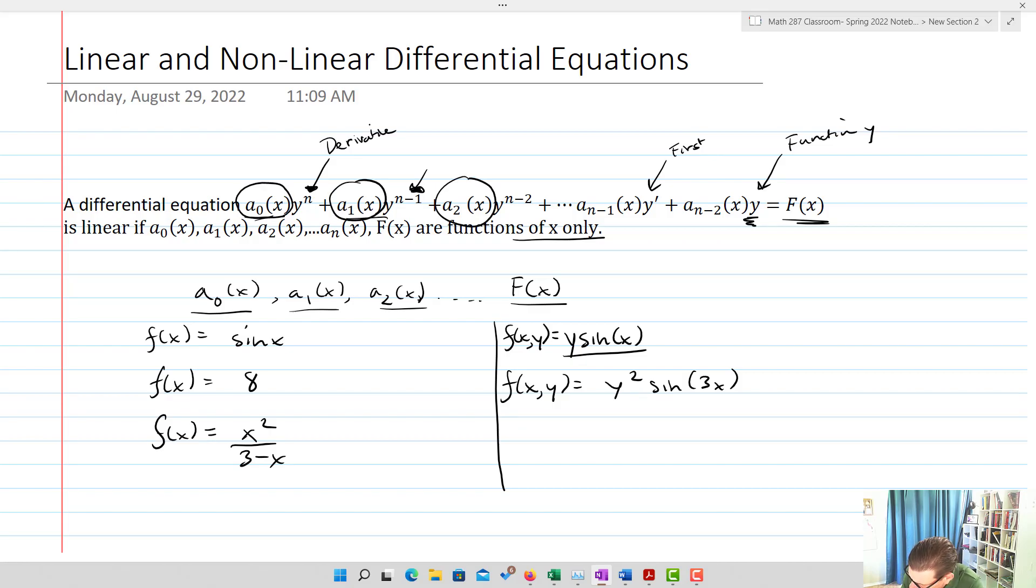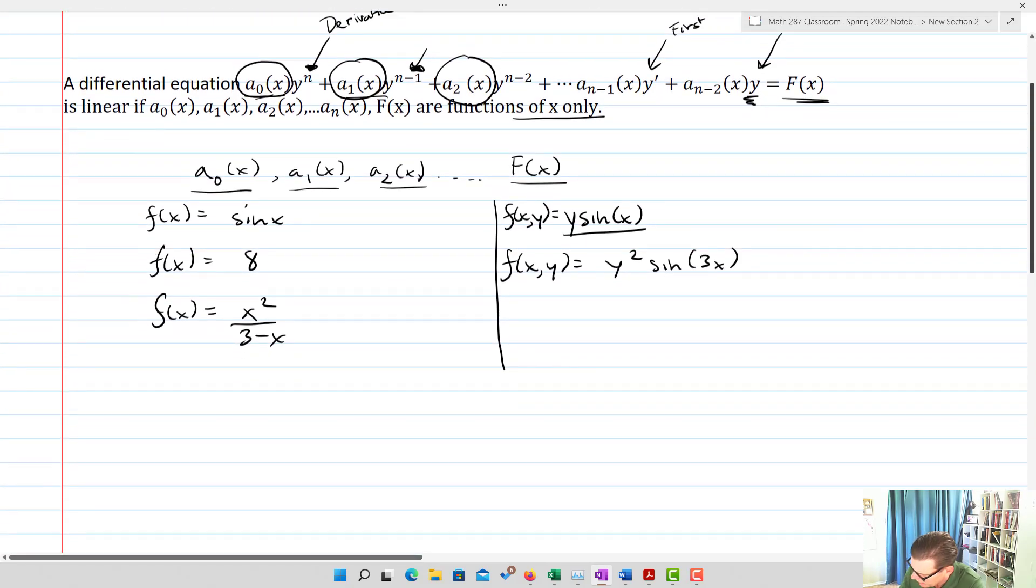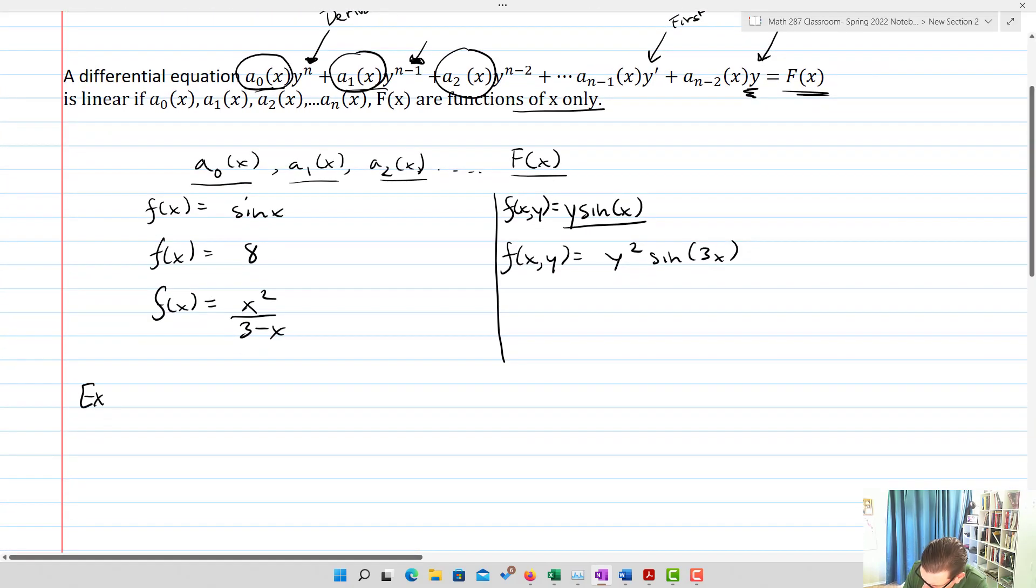So to give you an example of a linear function, we've got something like 3y'' + sin(x)y' + (3/(x-4))y = 11. We have to make sure that this one also has a function of x, and the constant is still a function of x.